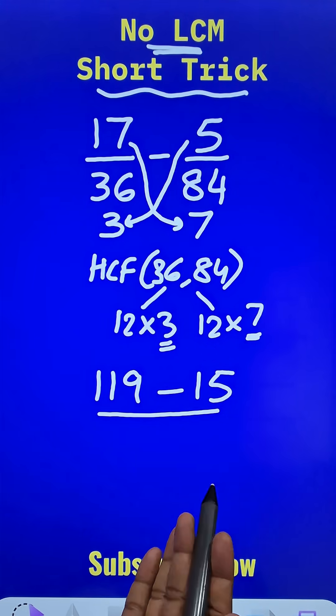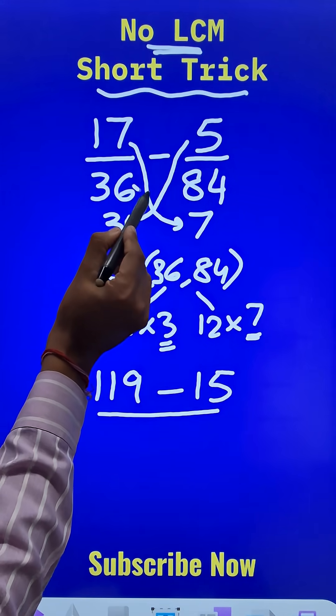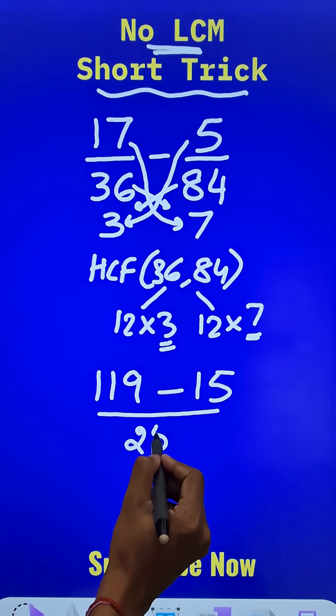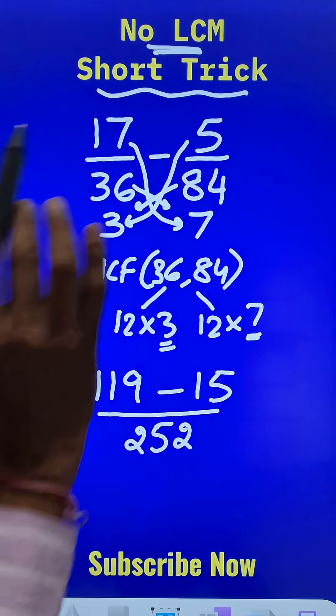you actually get the LCM only. How? Multiply 36 by 7 or multiply 84 by 3. The answer you get, 252, is actually the LCM of 36 and 84.